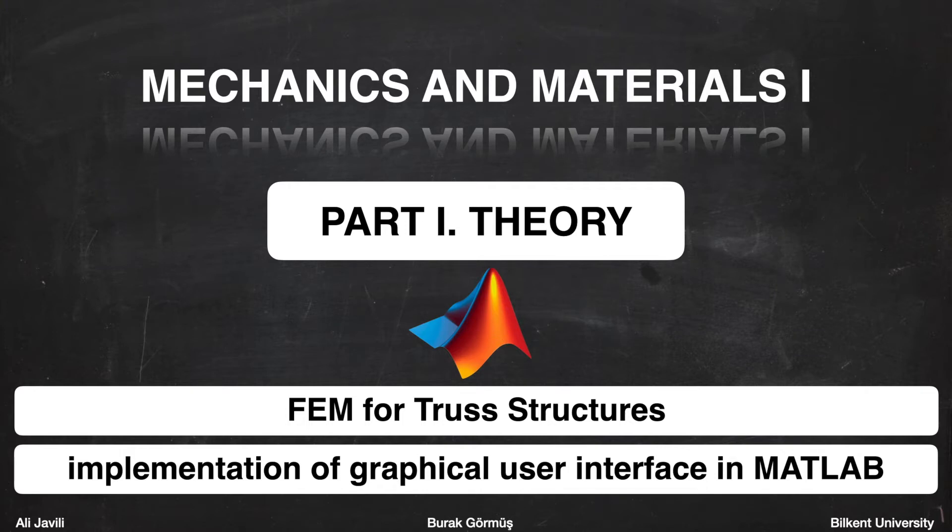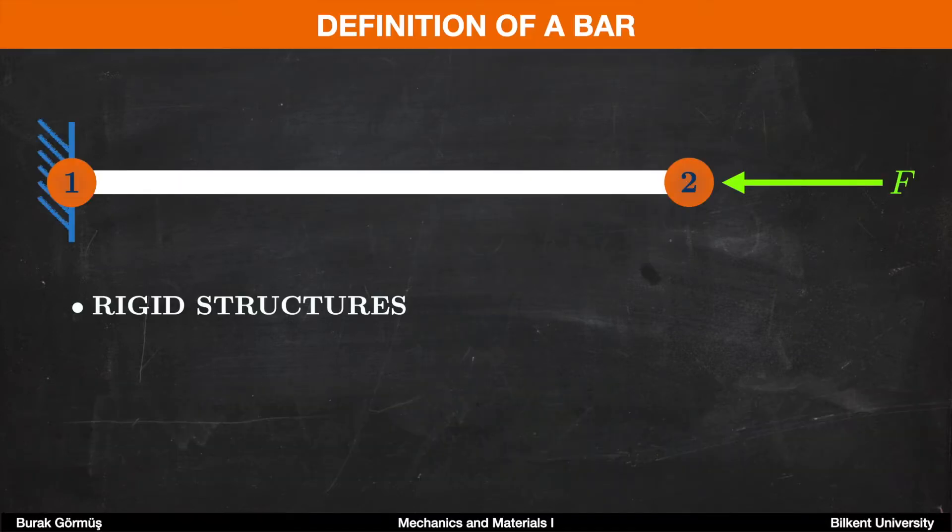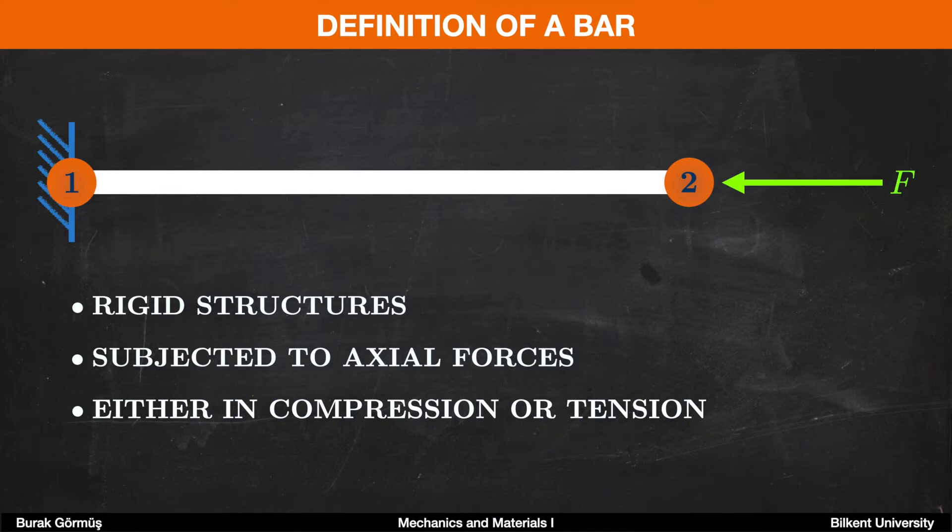In order to understand the analysis procedure for truss structures, let's start with examining bars. Bars are rigid structures that can be characterized with two nodes. They are assumed to be subjected to axial forces, and as a result they are either in compression or tension.